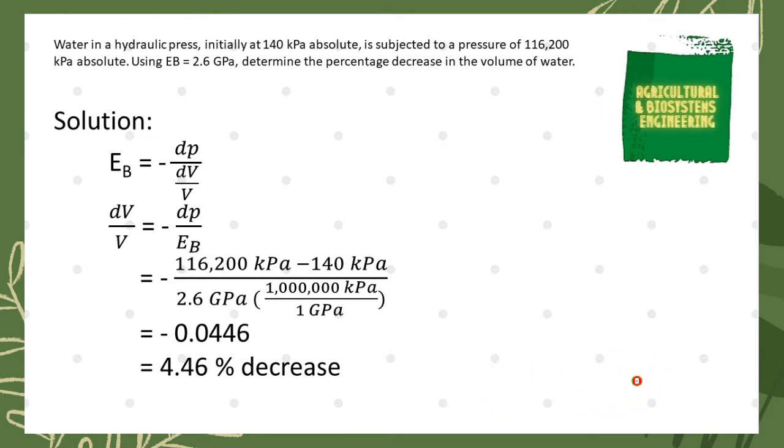Now we have bulk modulus of elasticity equal to negative DP over the decrease in volume, DV over V. DP is the symbol for the difference in absolute pressure. From this formula, we have to derive to get the formula for percentage decrease in volume because it's the requirement for the problem.